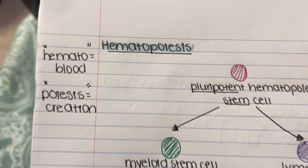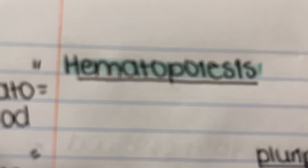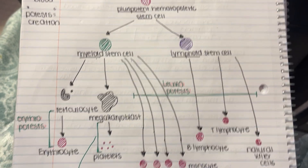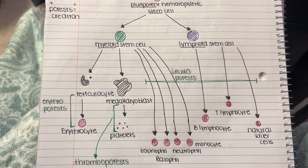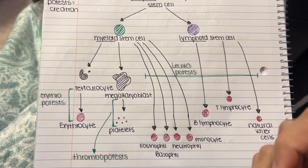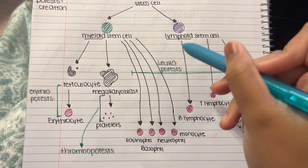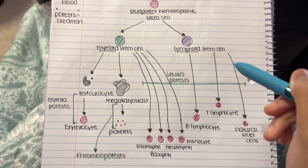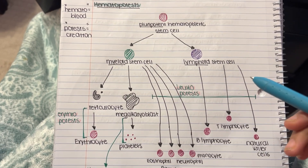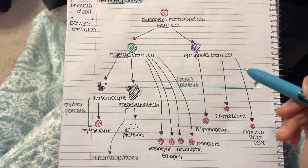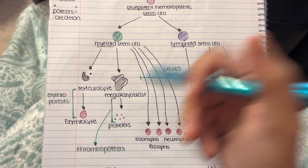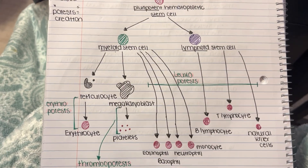Hopefully you learned more about hematopoiesis. It took me time to memorize this, so if I can memorize it, you can certainly memorize it — you just need time. You can take a screenshot of the chart and you'll be all set for A&P 2. God bless.